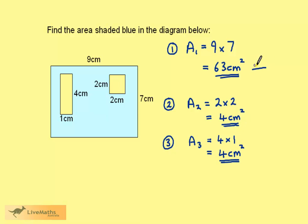The area is this area, take away the two holes. The blue area is 63, take away 4, take away 4. Calculating this gives us 55 centimeters squared.